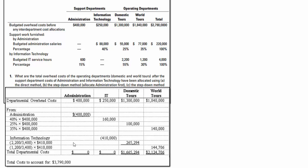We do the same thing with information technology, breaking it out by 55 and 30. What's interesting here is that IT is only allocated to domestic and world tours — you don't go backwards. Even though 15% of IT supported administration, since we've already allocated administration, we proceed with IT to the operating departments only. So we take 55 divided by 85% and 30 divided by 85%. When we're done, the total cost is still $3,790,000.